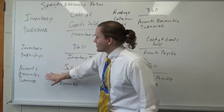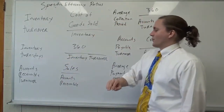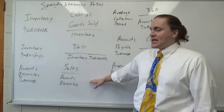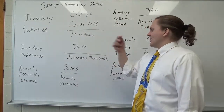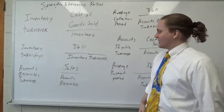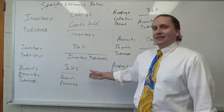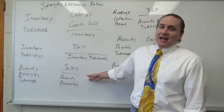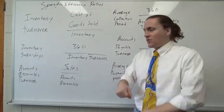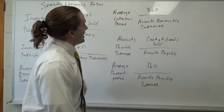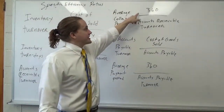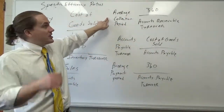We also have accounts receivable turnover. That's the dollar amount of sales divided by the amount of accounts receivable. Let's say that I have the number 9. That tells me that basically 9 times a year my accounts receivable turns over. I take that number, stick it in the denominator and put 360 in my numerator.